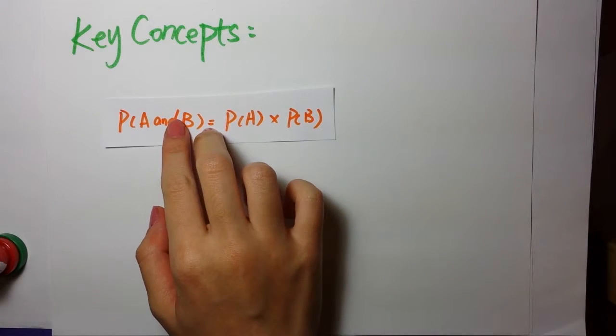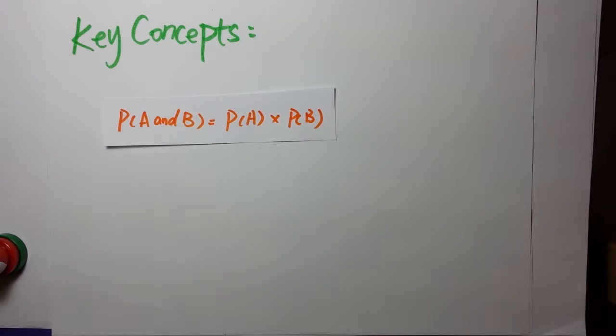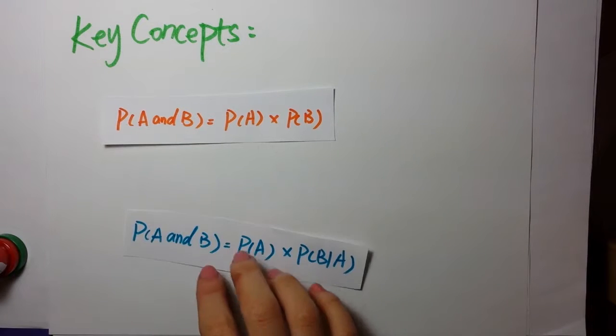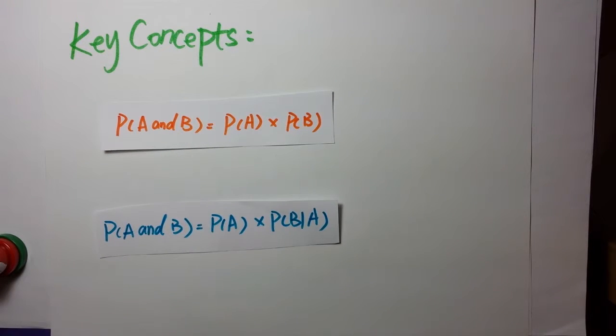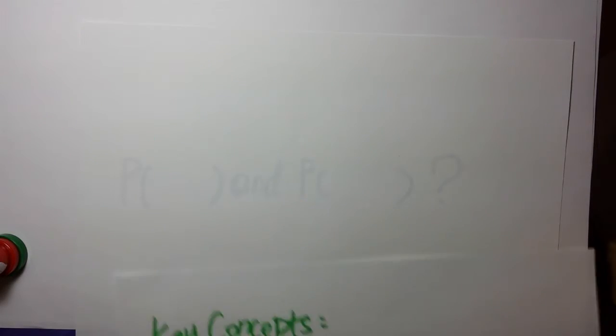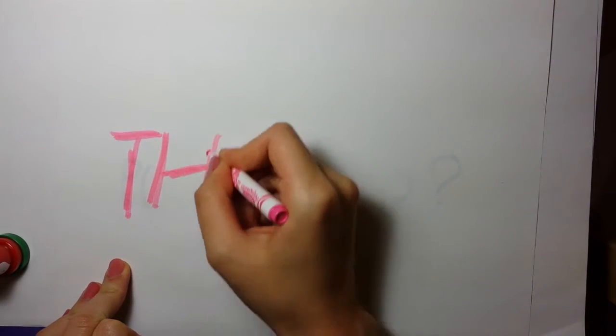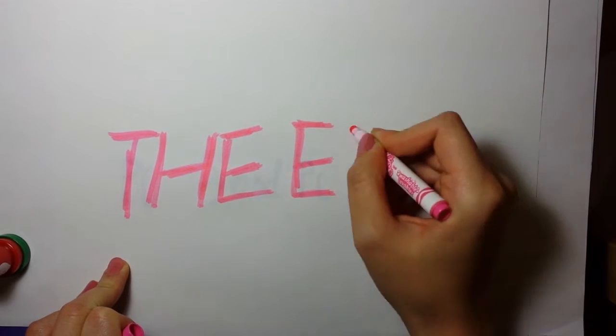Here are the key concepts we learn in this section. If A and B are independent events, then the probability of both occurring is given by P(A and B) equals P(A) times P(B). If they are dependent, P(A and B) equals P(A) times P(B|A). Thank you for watching this teaching review.